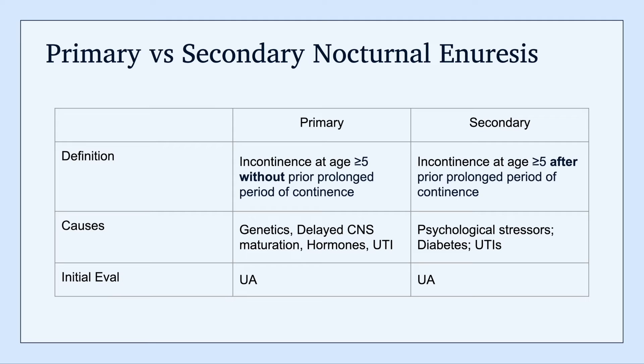You can discuss the causes of these separately. For primary enuresis, this generally involves genetics, delayed central nervous system maturation, hormones, or UTIs. Comparatively, for secondary enuresis, it's mainly caused by psychological stressors, diabetes, and UTIs. For both, the initial evaluation involves performing a urinalysis.